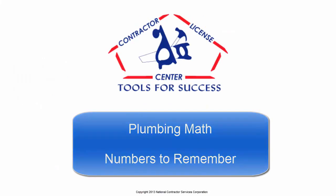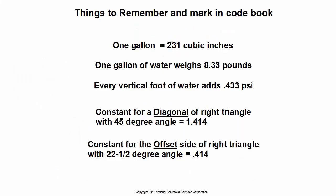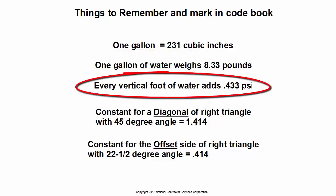Here are some facts that many codebooks do not contain. Notating them in your codebook is highly recommended. One gallon of anything is 231 cubic inches. One gallon of water weighs 8.33 pounds. Each vertical foot of water exerts 0.433 psi, pounds per square inch.